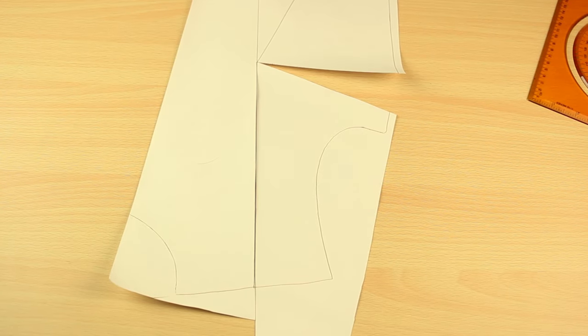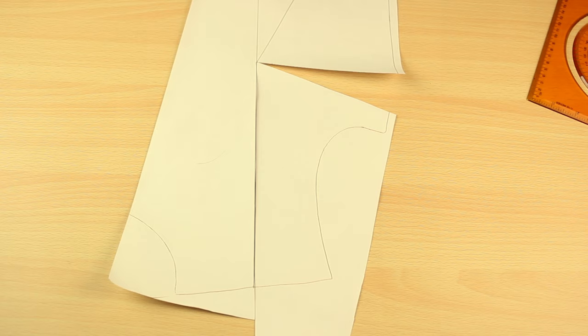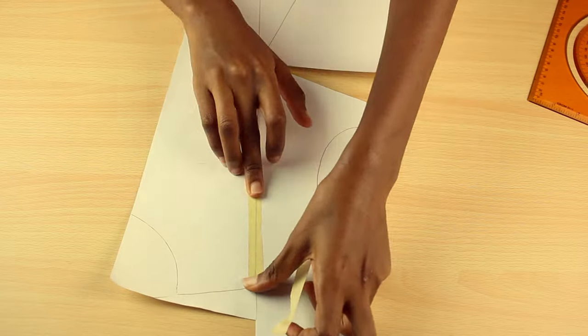And then I'm going to close the shoulder dart. You want to tape that down in place, and then you want to get a scrap of paper to close up the side dart, which is now our new dart.